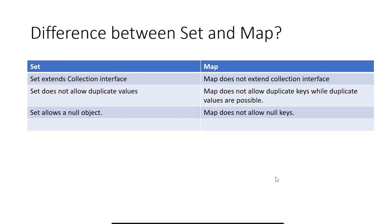What is the difference between Set and Map? Both are interfaces. Set extends the Collection interface while Map does not extend the Collection interface. Set does not allow duplicate values; Map does not allow duplicate keys, but duplicate values are possible. Set allows a null object while Map does not allow null keys.